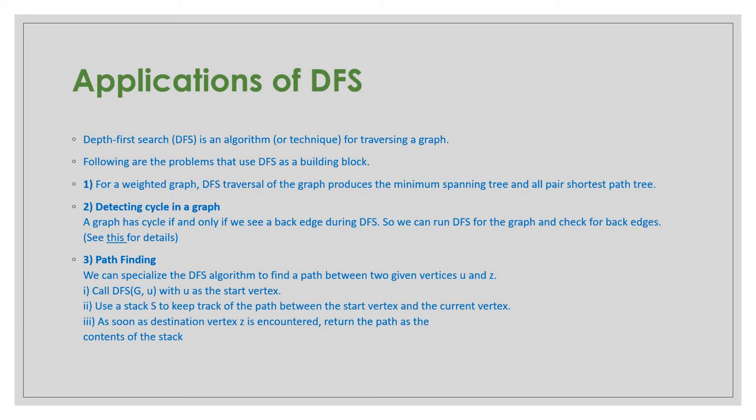For path finding, we can specialize the depth first search algorithm to find the path between two given vertices, for example u and z. Call DFS on graph G with u as the start vertex, and use a stack to keep track of the path between the start vertex and the current vertex. As soon as the destination vertex z is encountered, return the path as the content of the stack.